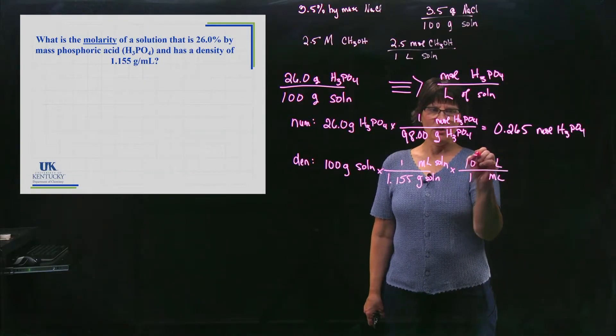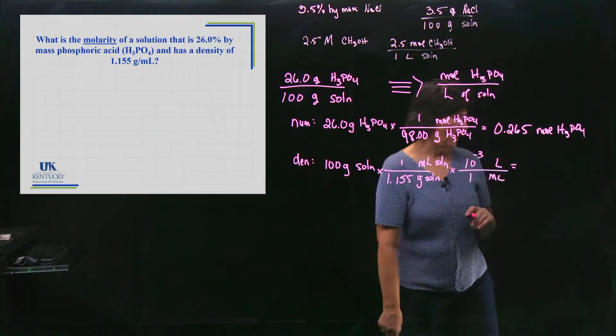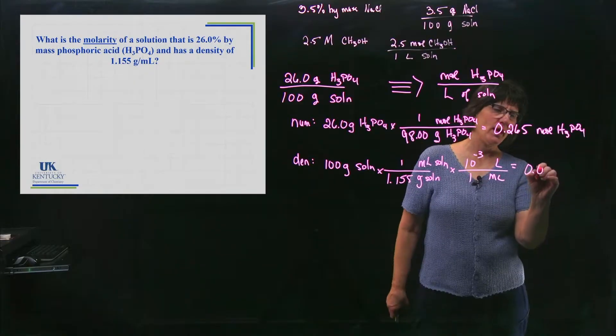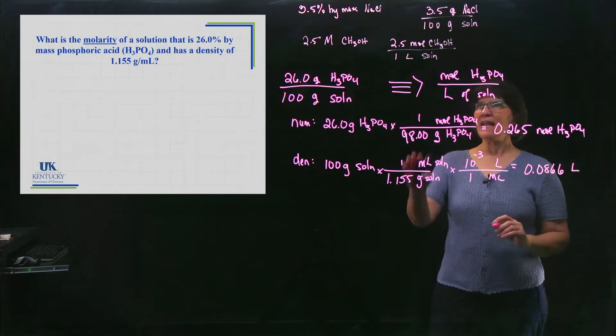Now I have milliliters of solution, but what I really need is liters of solution. Milli means 10 to the minus 3. And when I multiply and divide, as I see here, I have 0.0866 liters.